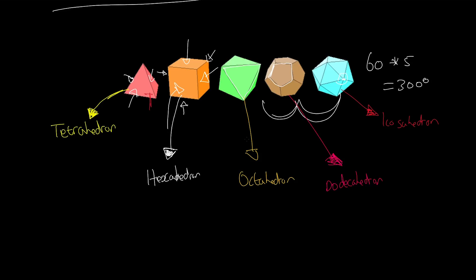They all share certain properties. They all have faces, they all have points (vertices), and they all have edges. An edge would be, for example, the line along one side of a face. All five Platonic solids have these three properties, just in different quantities.